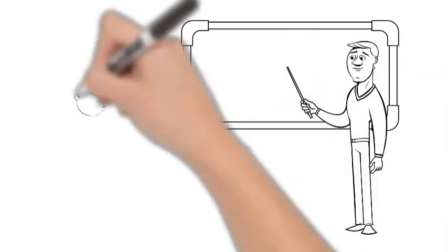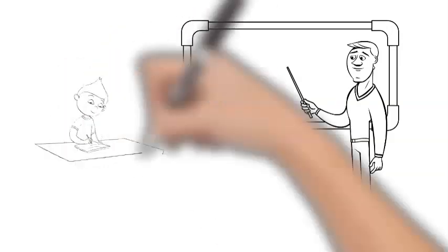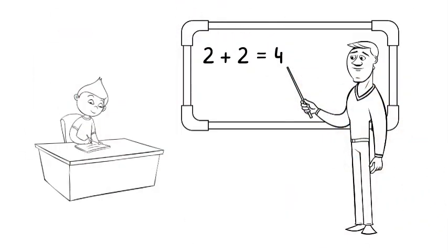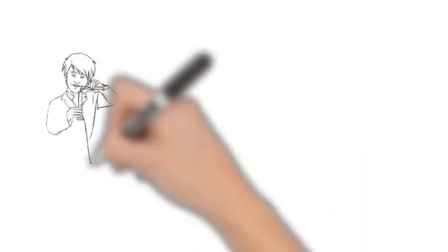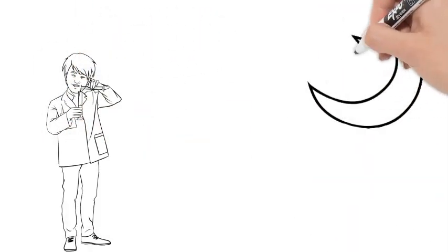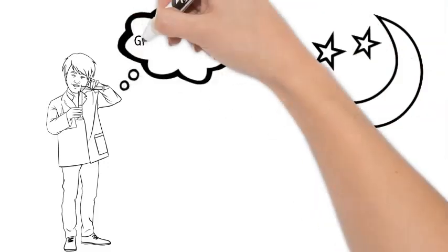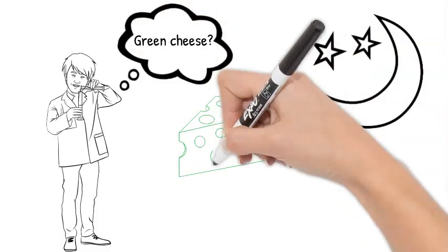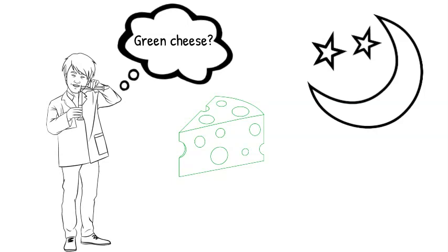But classroom teaching doesn't need nearly as much freedom, since the focus should be on current knowledge and methodology. In other words, a professor can investigate the contents of the moon, which might include green cheese, without teaching his hypothesis as if it were a fact in his Monday morning astronomy class.